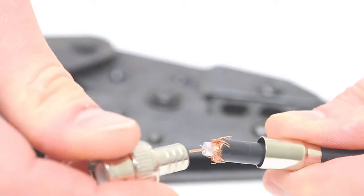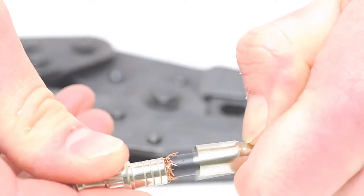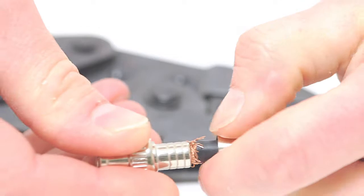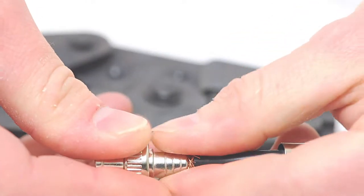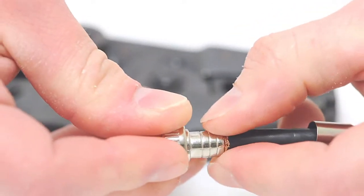Next, take the BNC male connector housing and slide it all the way down until it's against the jacket. Slide the ferrule back over the jacket, making sure it folds the braid onto the connector.